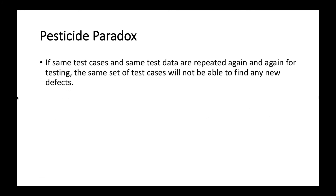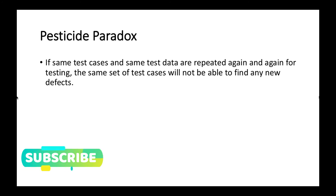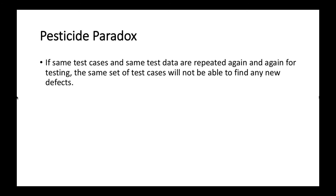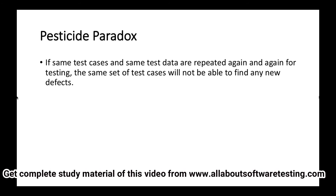The next principle is pesticide paradox. If the same test cases and same test data are repeated again and again, that same set of test cases will not be able to find any new defects in the software. If we repeat the same test cases, we will not be able to find any new defects, so we have to change our test cases if we want to find more defects.